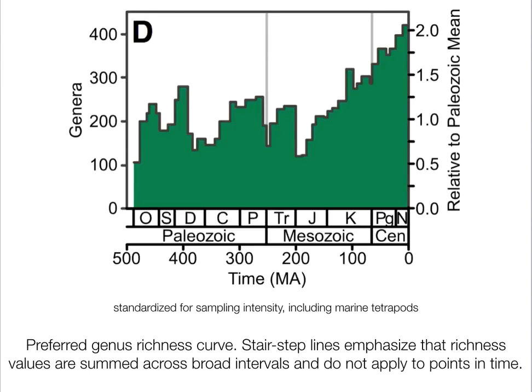This is generic diversity over the Phanerozoic. The Cambrian has been cut out because it's sort of weird. This is standardized for sampling intensity but includes marine tetrapods and makes some other distinctions as well, so it's very chunky. The stair-step lines emphasize that richness values are summed across broad intervals and do not apply to points in time — basically, pay attention to the big picture, as the fine scale can't really be resolved using this dataset.